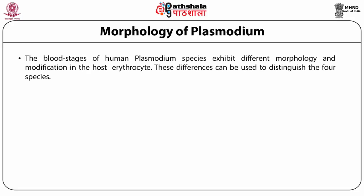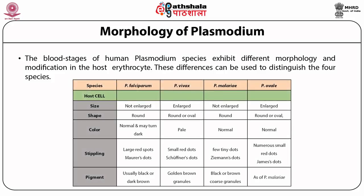Morphology of Plasmodium: the blood stages of human Plasmodium species exhibit different morphology and modification in the host erythrocyte, and these differences can be used to distinguish the four species. Plasmodium falciparum blood stages are characterized by the presence of slightly smaller and more numerous ring stages. Erythrocytes having multiple infections are seen more often in Plasmodium falciparum. Distinct crescent-shaped gametocytes of Plasmodium falciparum appear late in the infection. Plasmodium vivax shows enlarged infected erythrocytes with granules called Schüffner's dots, and the trophozoite has an amoeboid appearance. The schizonts have more than 20 merozoites.